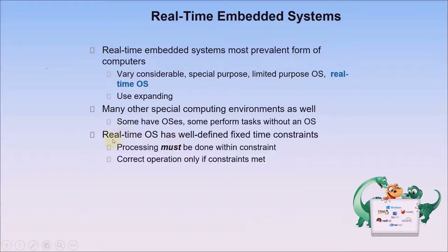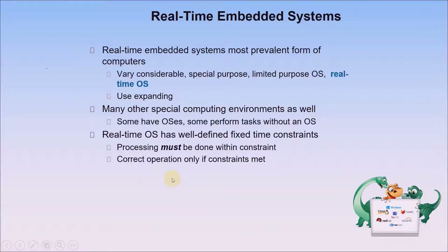Real-time embedded systems are often used as control devices in dedicated applications such as controlling scientific experiments, medical imaging systems, industrial control systems, and display systems, with well-defined fixed time constraints. Real-time systems may be hard or soft real-time. Hard real-time has limited or absent secondary storage, with data stored in short-term memory or ROM, and conflicts with time-sharing systems not supported by general-purpose operating systems. Soft real-time has limited utility in industrial control and robotics, but is useful in multimedia and virtual reality applications requiring advanced OS features.